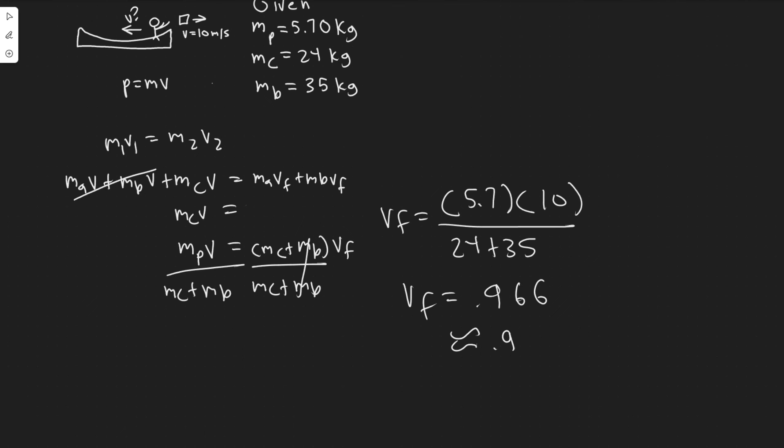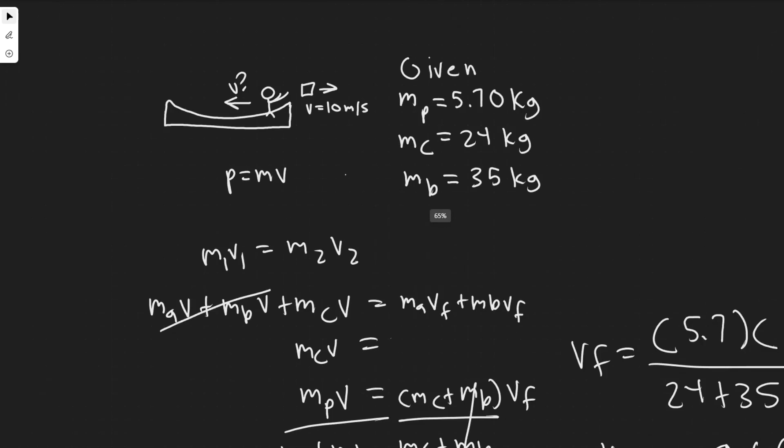So let's just say about 0.97 or we'll just round it, 0.97 meters per second because this is velocity. And we know it's going to travel in the opposite direction because that's what happens when you throw a package.